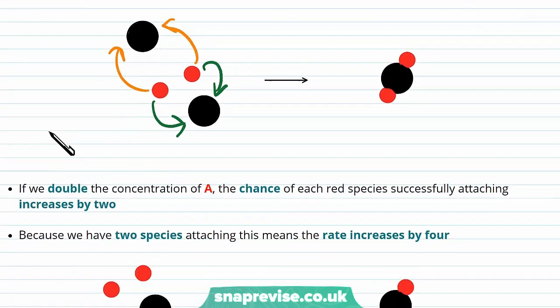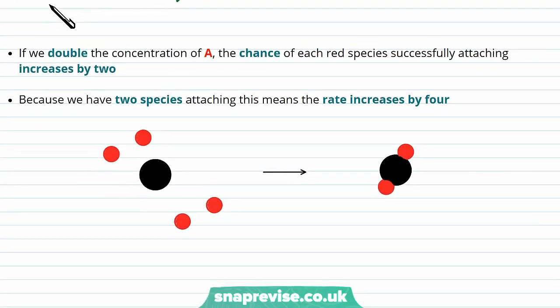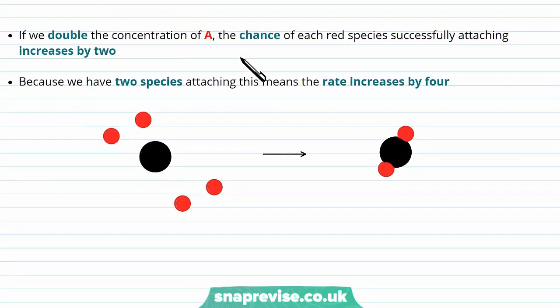If we doubled the concentration of A, then the chance of each red species successfully attaching to the black species X increases by two. And because there are two of A involved, this increases the total rate by four. We're twice as likely to get the reaction happening on this side, and twice as likely to get the reaction happening on this side, which means we're four times as likely to get the reaction happening overall.